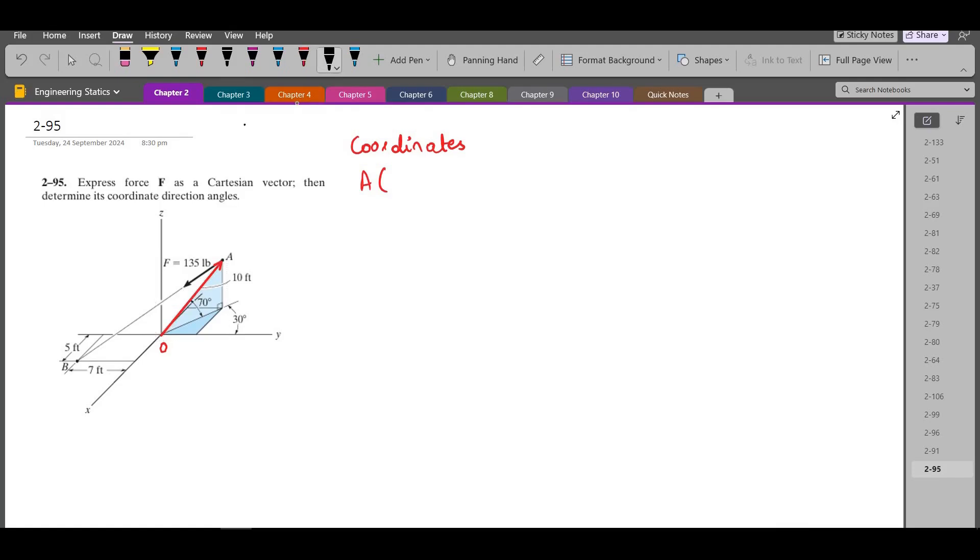Now I have to draw its projection along the xy-plane to resolve it along the x and y-axis. So the projection on the xy-plane would look something like this. And it can be written as 10 cos 70. Now I can resolve this projection along the y-axis and the x-axis. This component, the y component is 10 cos 70 into cos 30 which can be simplified to 2.96.